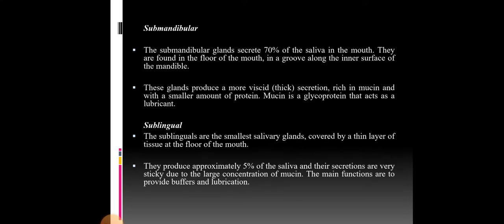The next salivary gland is the submandibular gland. Submandibular glands secrete 70% of the saliva in the mouth. They are found in the floor of the mouth in a groove along the inner surface of the mandible. These glands produce a more viscous, thick secretion rich in mucin with a smaller amount of protein. Mucin is a glycoprotein that acts as a lubricant. The sublingual glands are the smallest salivary glands, covered by a thin layer of tissue at the floor of the mouth. They produce approximately 5% of the saliva and their secretions are very sticky due to the large concentration of mucin. Their main functions are to provide buffers and lubrication.